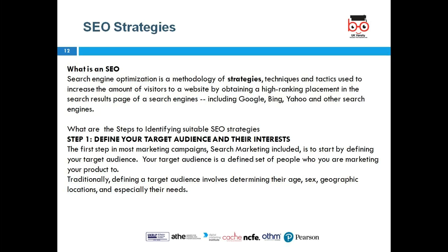SEO — search engine optimization — is something you should definitely have some knowledge of. Search engine optimization is about ensuring that your web page can be picked up more easily by search engines. For instance, if you are selling apples you would use keywords that enable your website to come to the top of search results. There are two types of SEO: on-page and off-page.